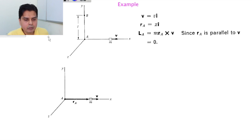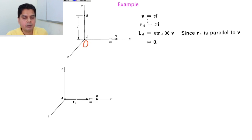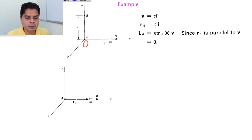Example: a particle of mass m moves along the X axis. Find the angular momentum about point A (on the X axis). Here v = vî and rₐ = xî, so Lₐ = m(xî) × (vî) = mv(î × î) = 0, since î × î = 0. The angular momentum about point A is zero.